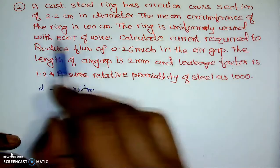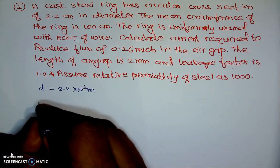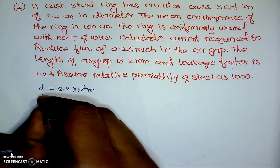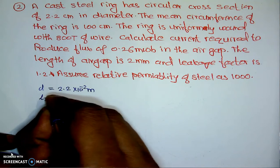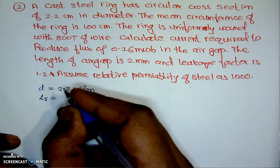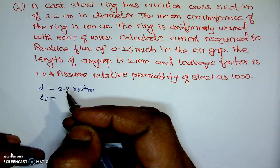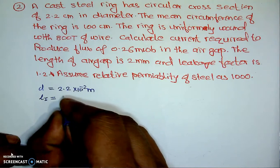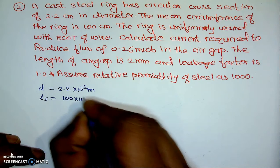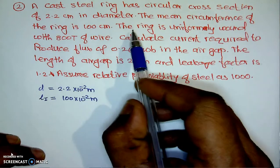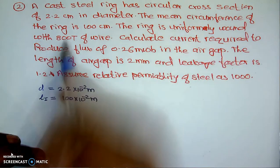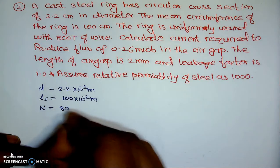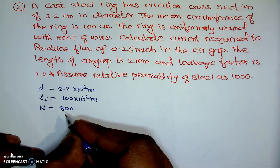The mean circumference of the ring is 100 cm, meaning the length of the magnetic iron or steel path, which I will call Li, is 100 cm — that is 100 × 10⁻² meters. The ring is uniformly wound with 800 turns.